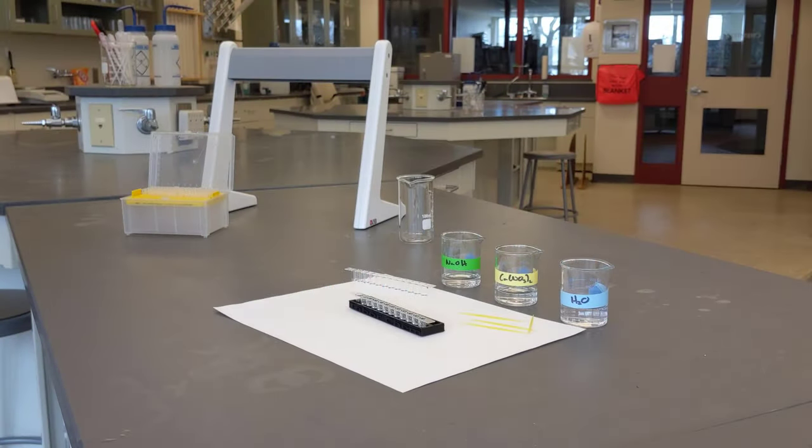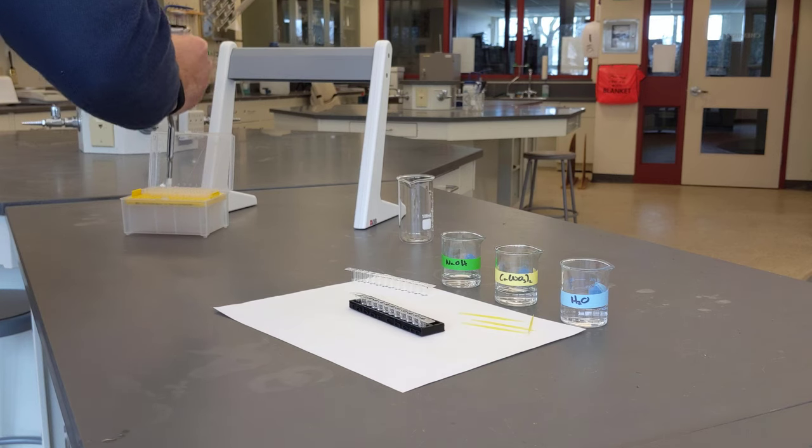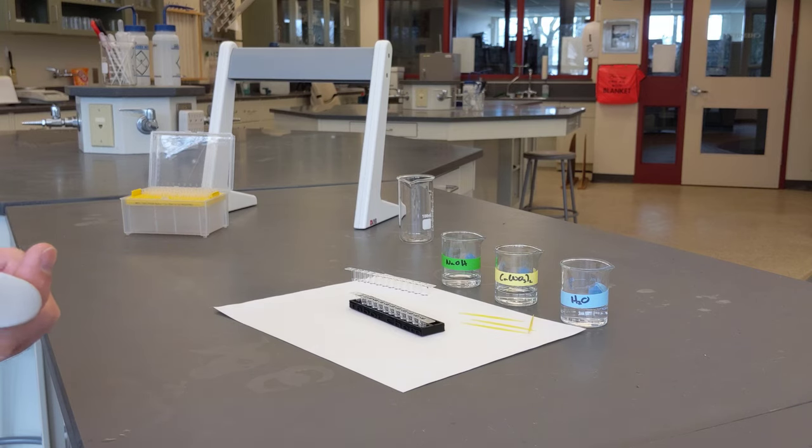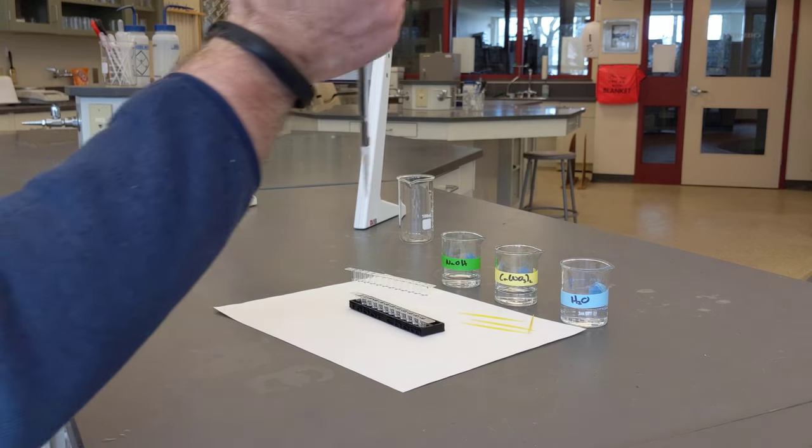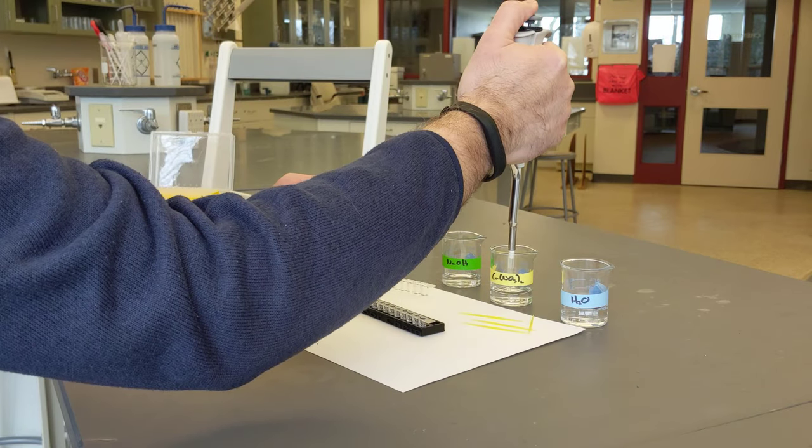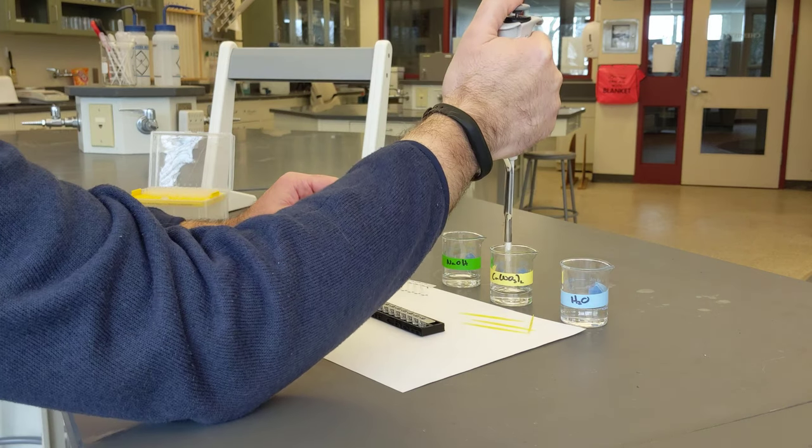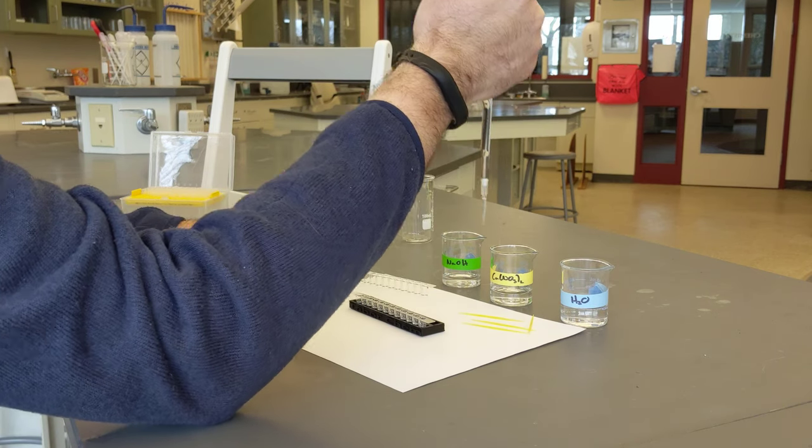Set 4 with a new tip. Dispense 100 microliters of 0.1 molar calcium nitrate into wells 1 and 2. Put 100 microliters in well 1, 100 microliters in well 2.